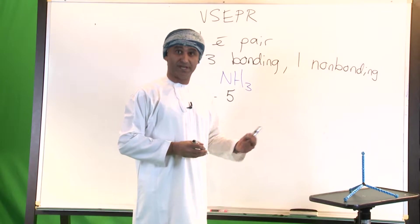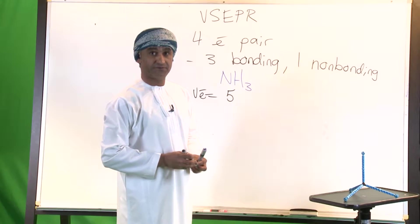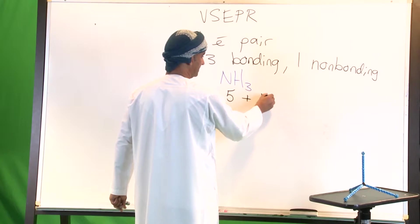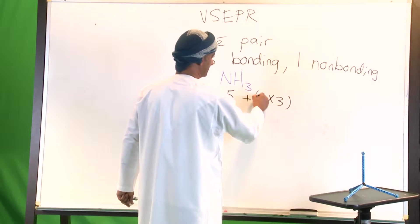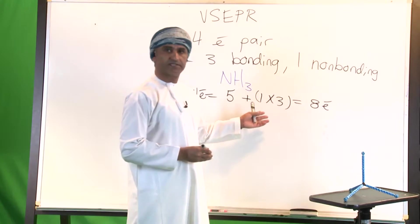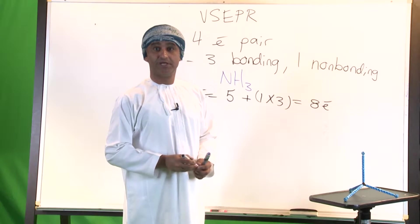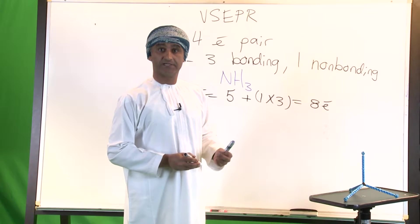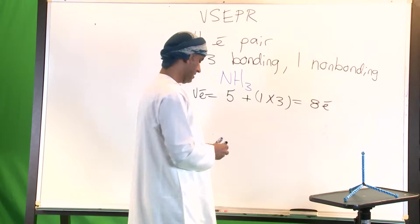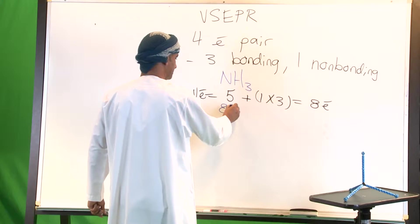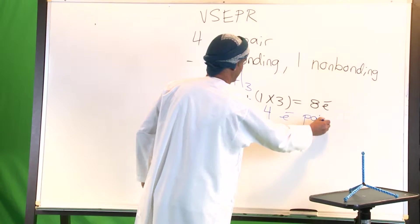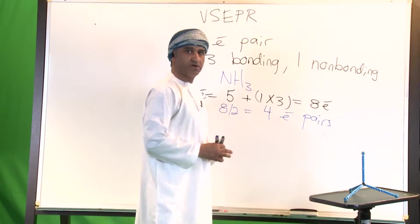The total number of valence electrons is five from nitrogen — remember nitrogen is in group 5A — plus one from each of the three hydrogen atoms, giving eight electrons total. Dividing eight by two gives four electron pairs that should be present in the Lewis structure of ammonia.